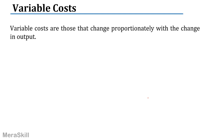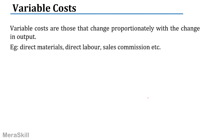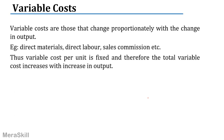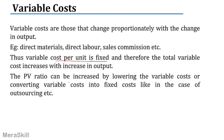Variable costs change proportionately with the change in output — like direct material, direct labor, and sales commission. The variable cost per unit is fixed, and the total variable cost increases with an increase in output. The PV ratio can be increased by lowering the variable cost or converting variable cost into fixed cost, as in the case of outsourcing, so that greater volume of output reduces the per-unit cost.